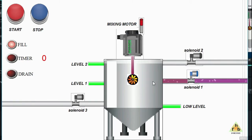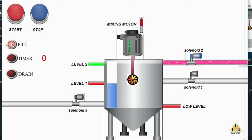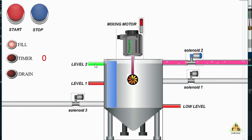Now we'll observe the indicators. When solenoid 1 is turned on, the fill indicator turns on. As the liquid reaches Level 1, solenoid 1 turns off and solenoid 2 turns on. The fill indicator continues to run because both solenoid 1 and 2 are filling the tank. The fill continues until the liquid reaches the maximum level.